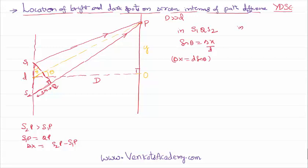And in another right angle triangle P, O, O dash, we can write tan theta, that is opposite side y by adjacent side capital D.